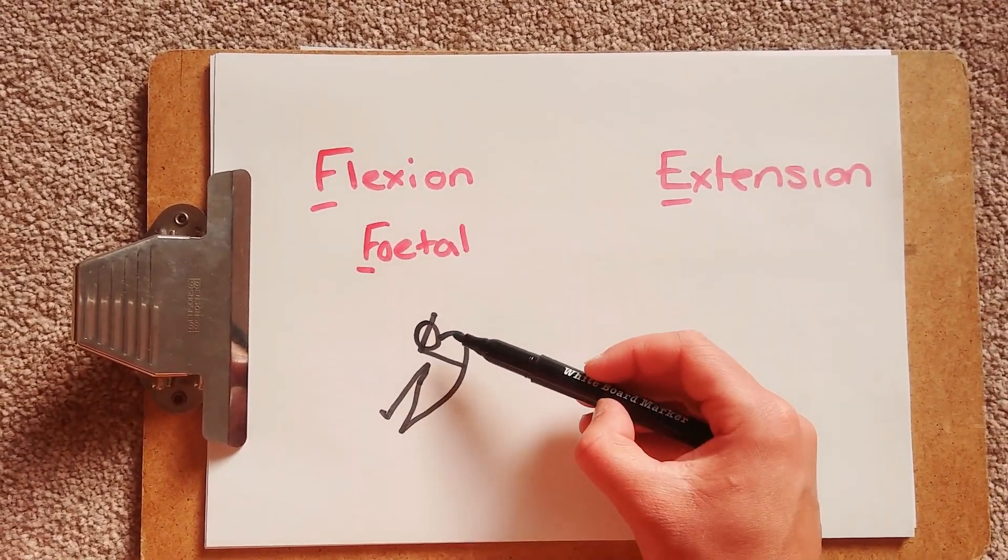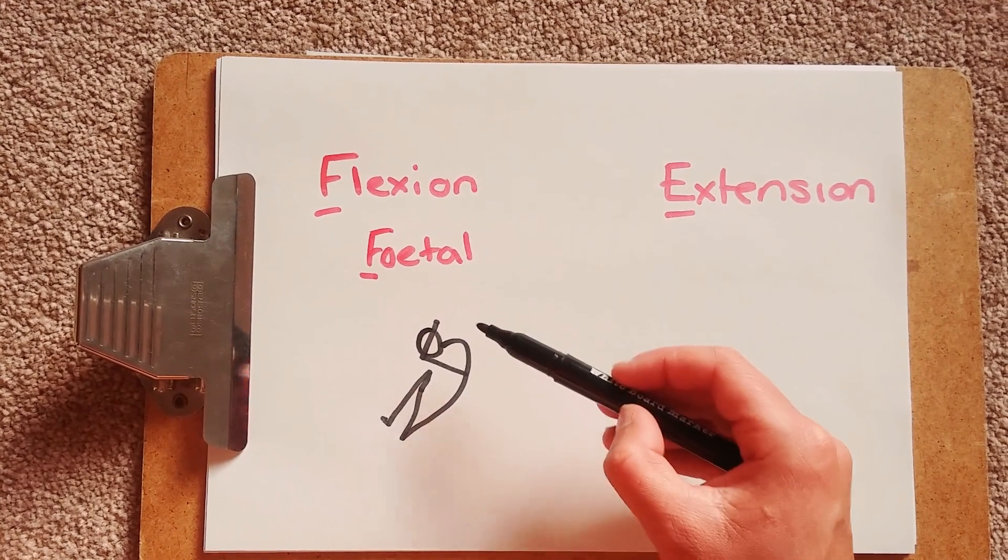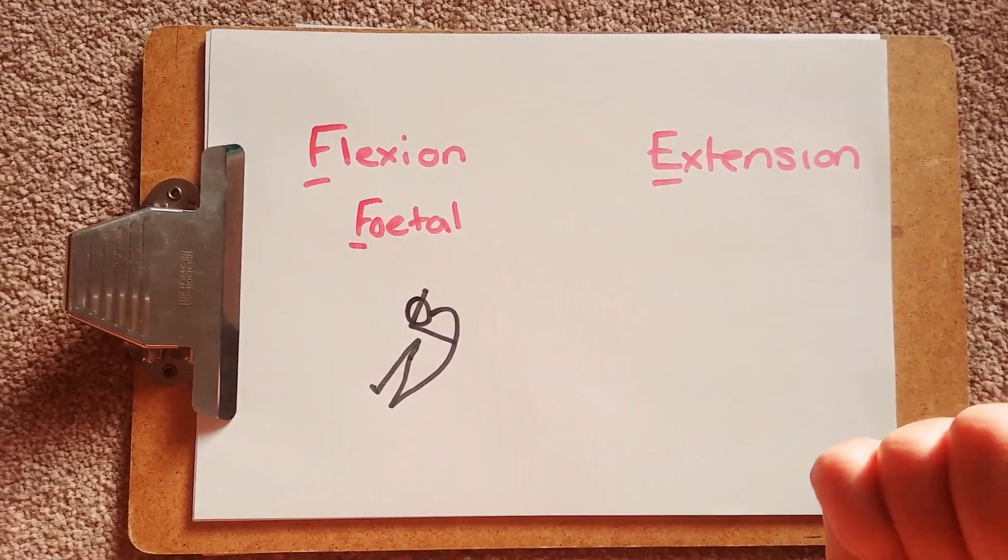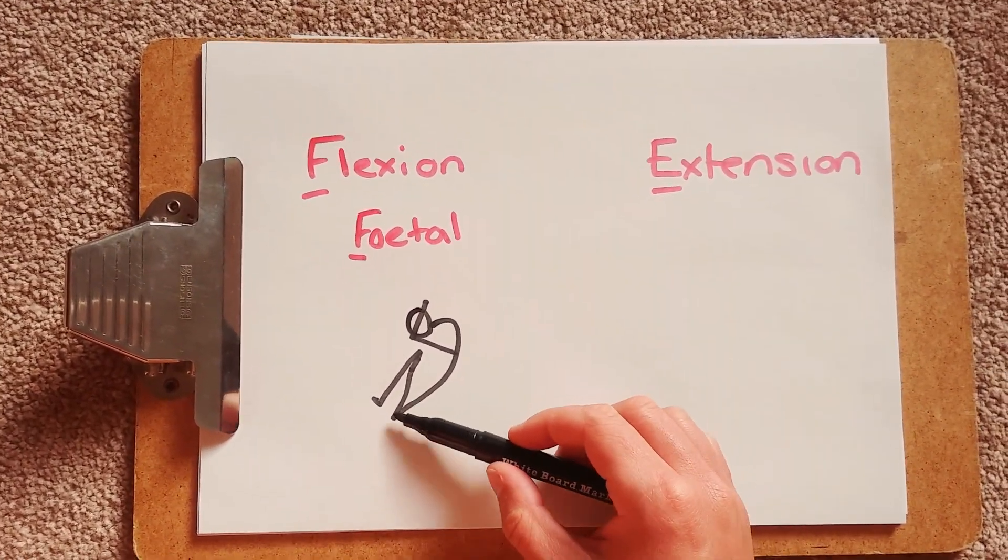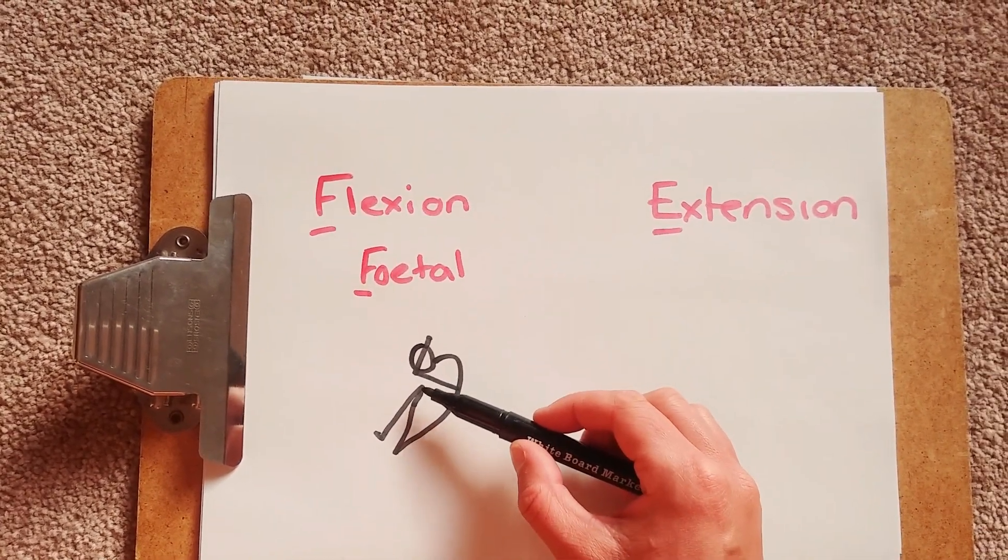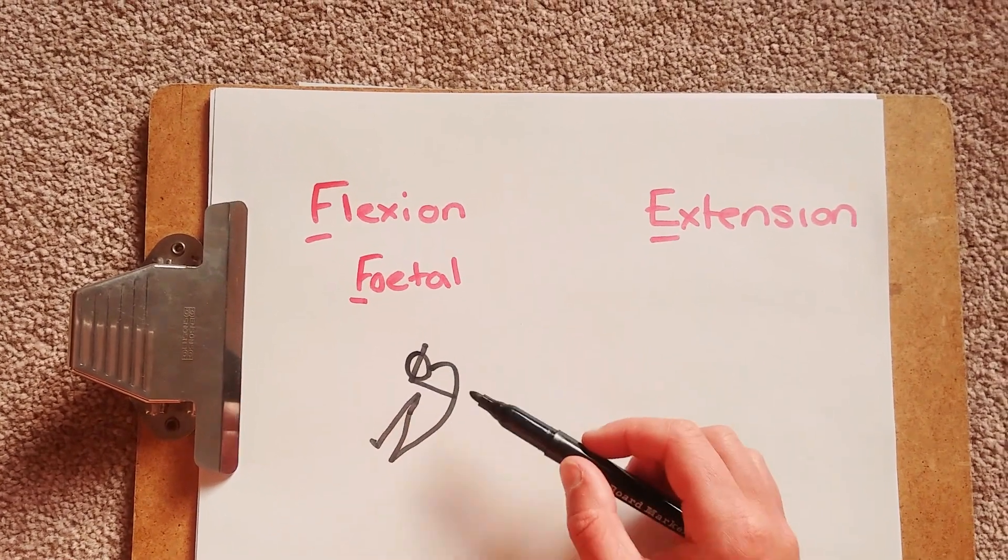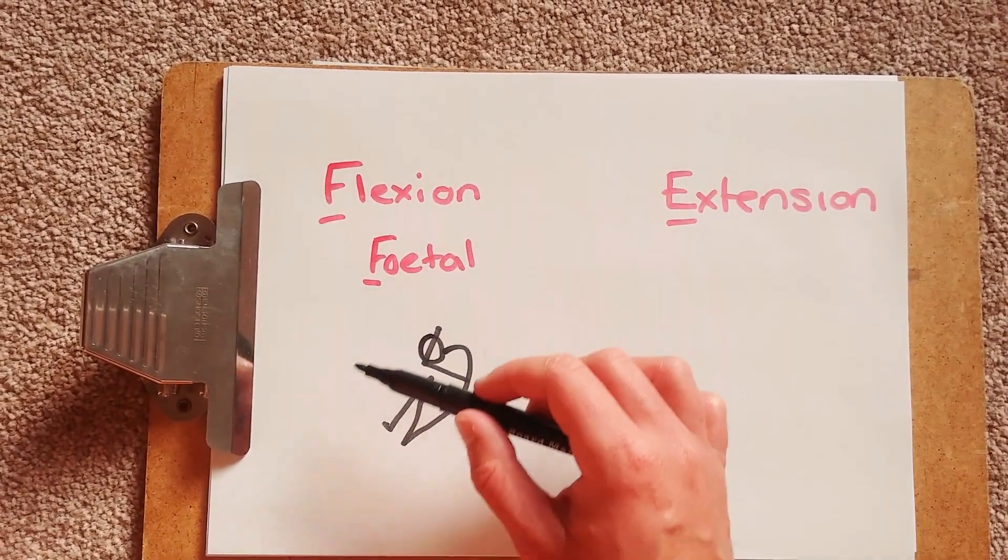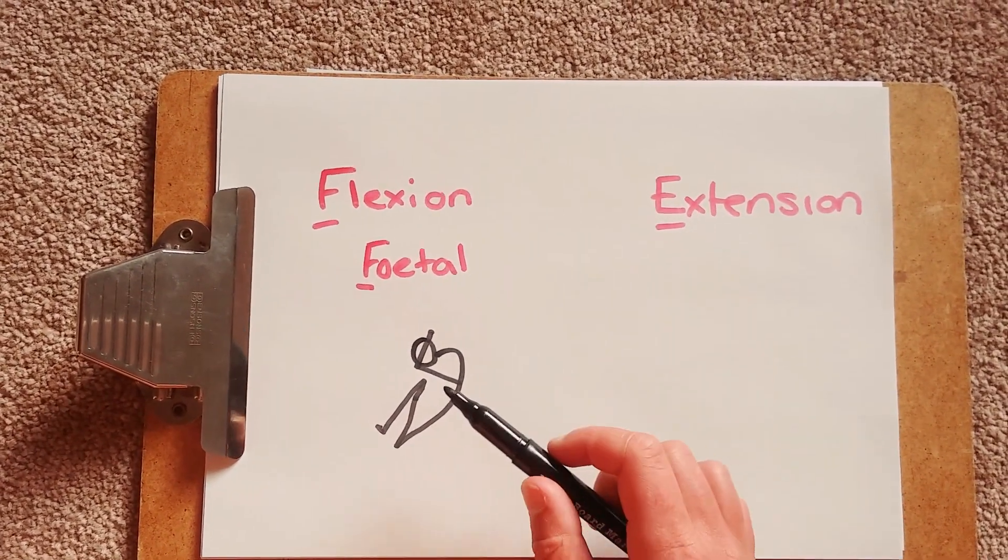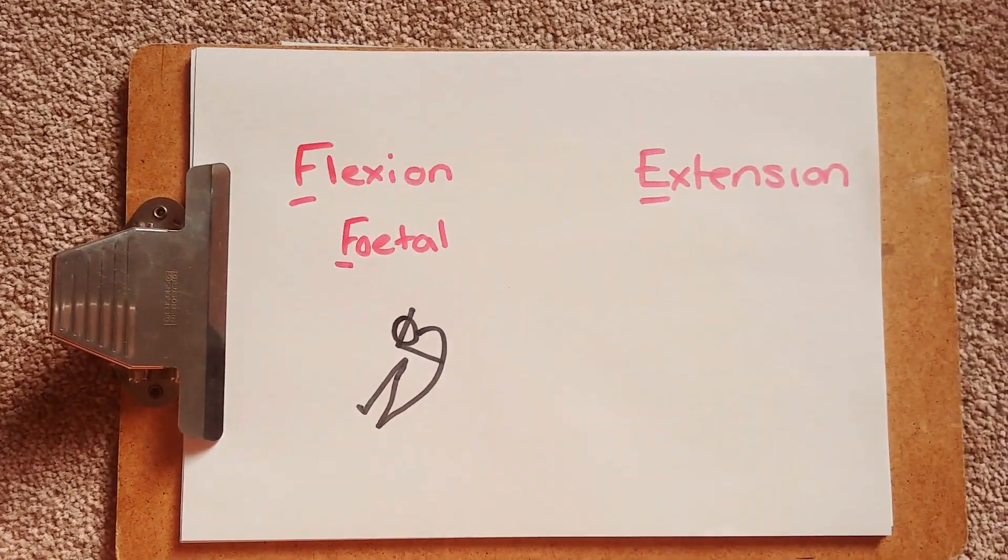So your spine is in total flexion because you're curled right round. You're in the ab crunch position. Your hips are flexed because they're curled into the body. Your knees are flexed. Your shoulders are flexed and your elbows are flexed. So in this position most of your major joints are all flexed. So fetal position equals flexion.